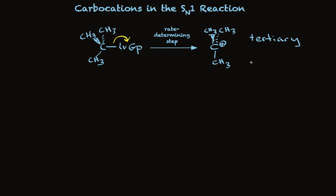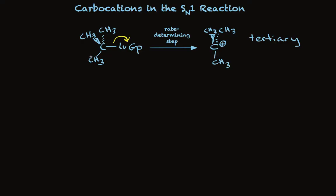Let's compare this to a slightly different structure. What if one of the methyl groups were not there and we had a hydrogen instead? So let's consider that we have a hydrogen rather than a methyl group with this carbon. Now this is a secondary carbon, and we'll make a secondary carbocation.